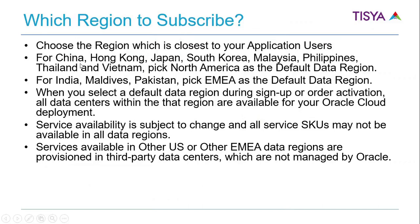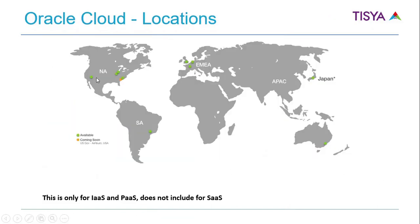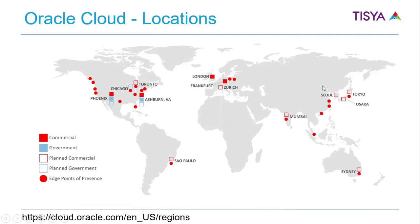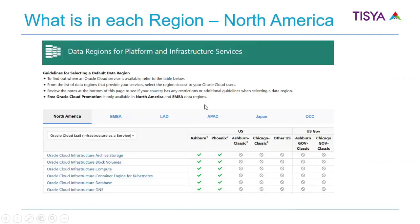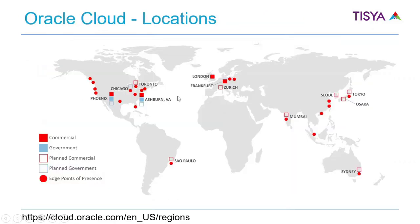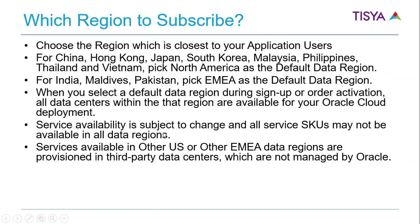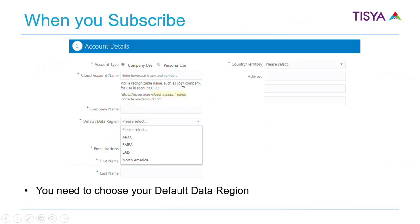Oracle's recommendation is to choose the region closest to your application users. For example, for China, Hong Kong, etc., use North America as the default region. For places like India, Maldives, Pakistan, choose EMEA. You also need to keep in mind your regulatory compliance requirements — for example, in Europe there is a requirement that data must be kept within Europe — so keep that in mind when subscribing to Oracle Cloud.